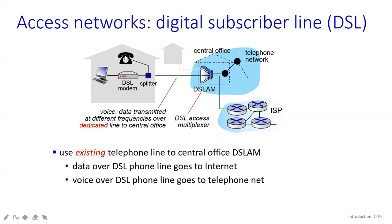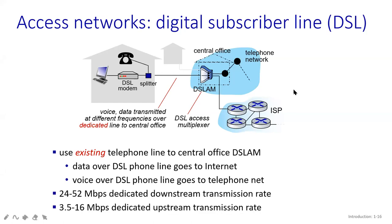Two things will be there: one is voice, one is data. The data is going to transmit in this way. How about voice? The voice can also be transmitted through your DSL Access Multiplexer, and it goes directly to the telephone network. So the data values will go to your ISP global internet network, and the voice will go directly to your telephone network. This is all about your access network under your Digital Subscriber Line.